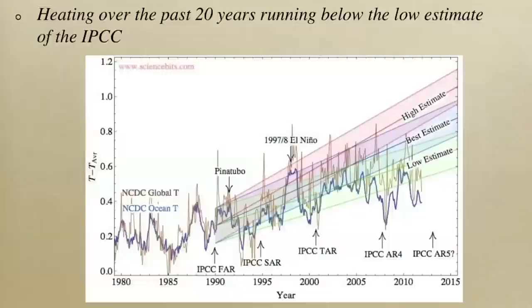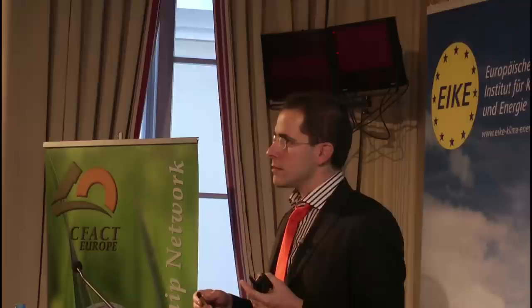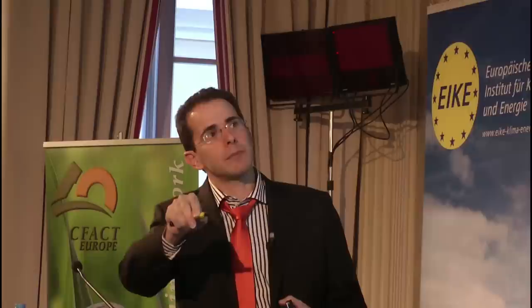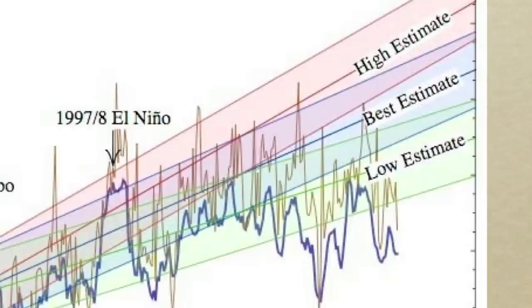Because this value didn't significantly change, the predictions made in the first IPCC report in 1990 should still be valid. But what we see is that the global temperature increase is now roughly at the lower end of the estimate, if not even below it. So basically, the predictions made by the IPCC are wrong.